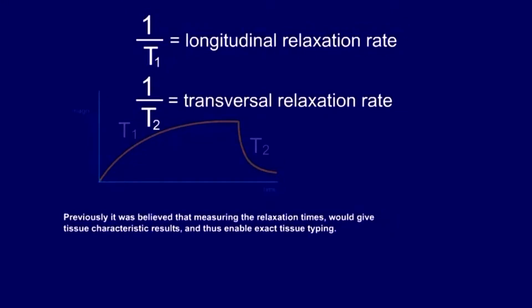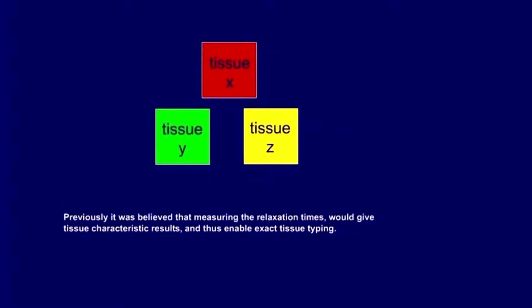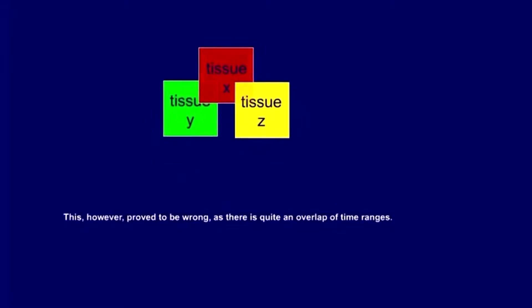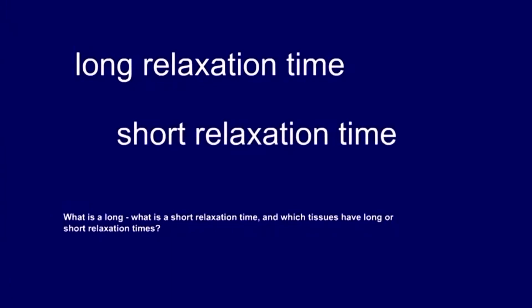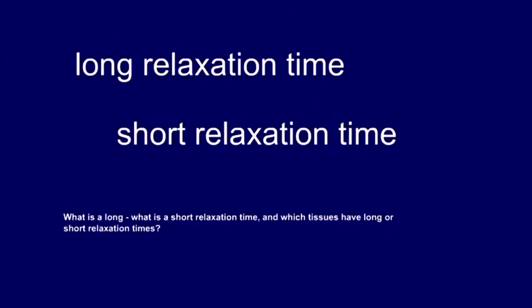Previously, it was believed that measuring the relaxation times would give tissue-characteristic results and thus enable exact tissue typing. This, however, proved to be wrong, as there is quite an overlap of time ranges. What is a long and what is a short relaxation time? And which tissues have long or short relaxation times?